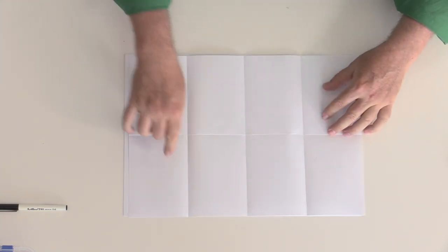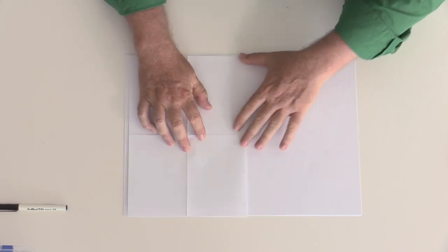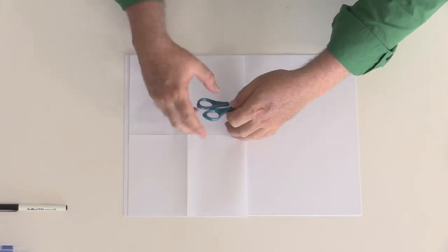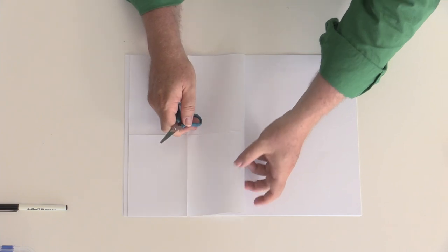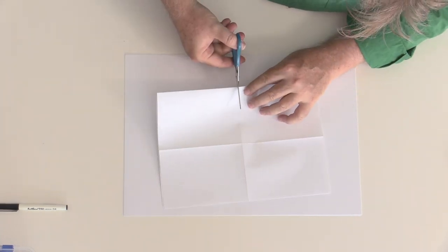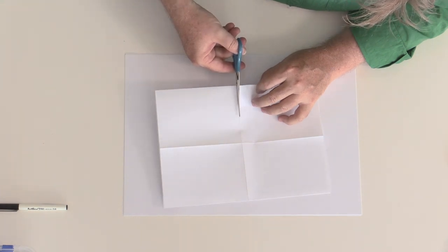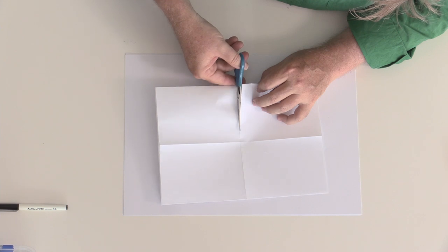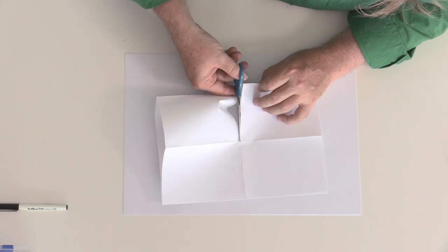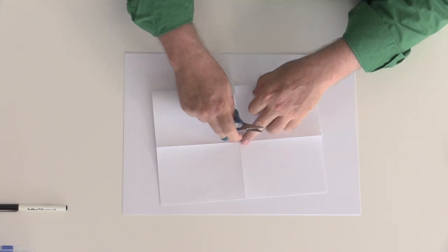Okay, so I've ended up with a grid of eight. Next thing is to fold that one closed again and then take our scissors and carefully cut this section here just to this fold.